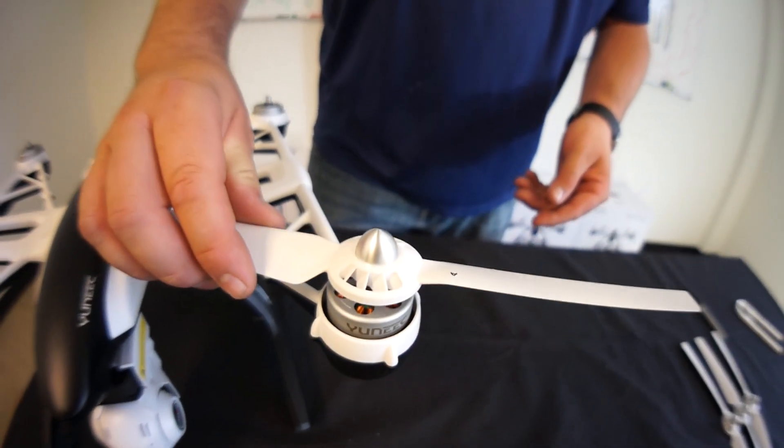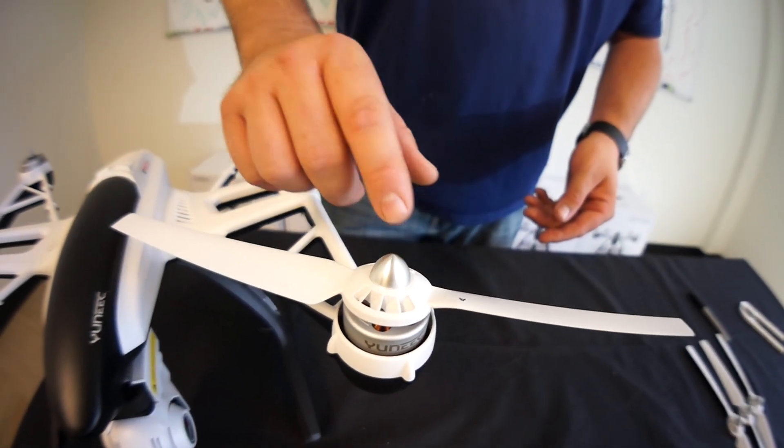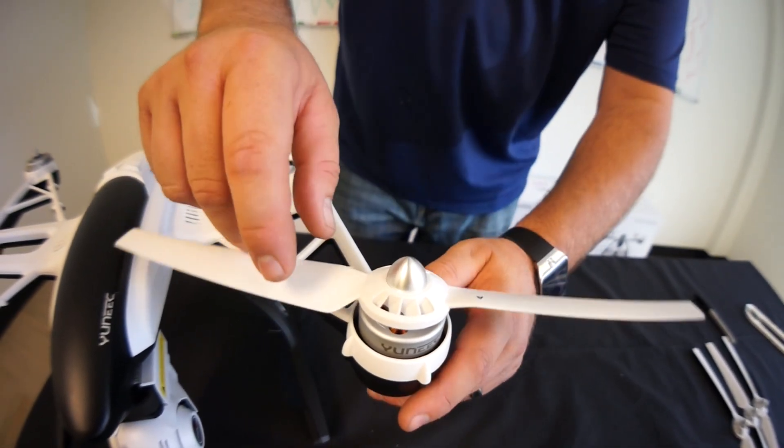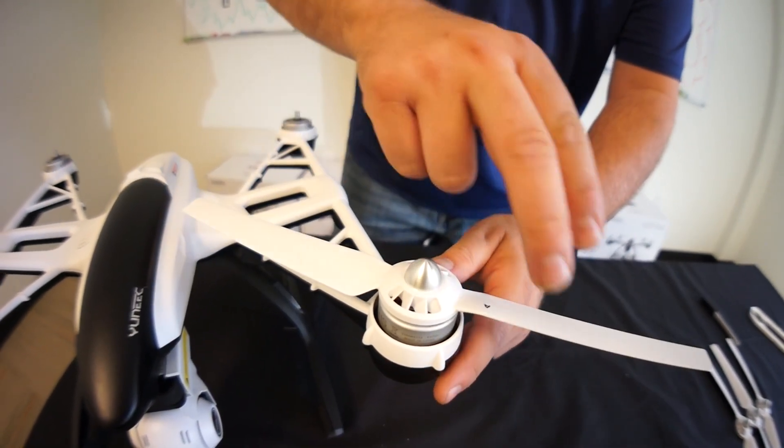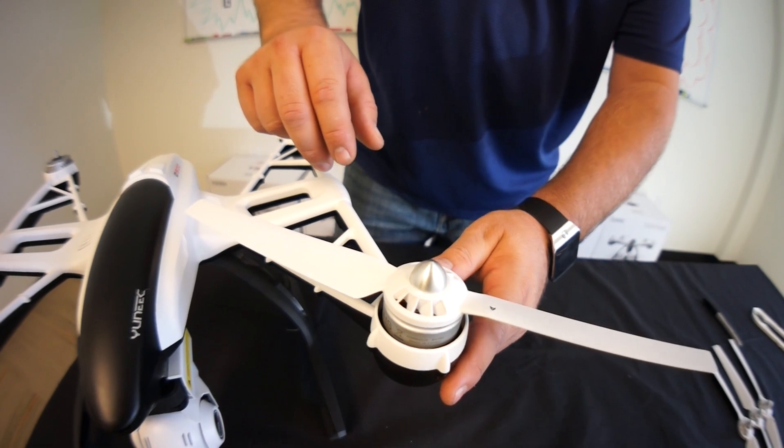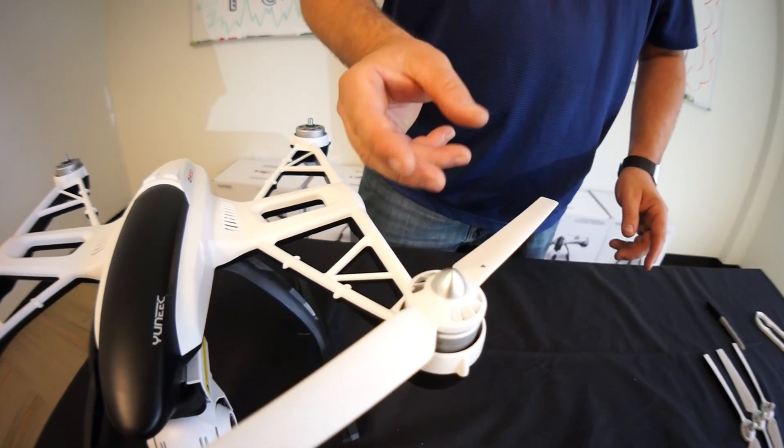Once you grab your A blade, go ahead and set it on top. You'll notice there's a lock and unlock. Go ahead and spin your blade on. Trailing edge is always tightening. Leading edge is always loosening. So we're going to spin it on until it basically hits the rubber O-ring.